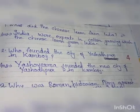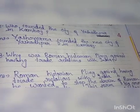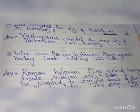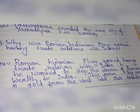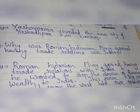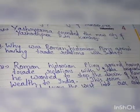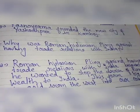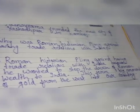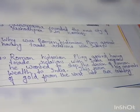Question number two: Who founded the city of Yasodhpur in Kambos? Answer: Yasuvarma founded the new city of Yasodhpur in Kambos. Question number three: Why was Roman historian Pliny against having trade relations with India? Answer: Roman historian Pliny was against trade relations with India because he wanted to stop the drain of Roman wealth to India, as trade brought a big amount of gold from the West into our country.